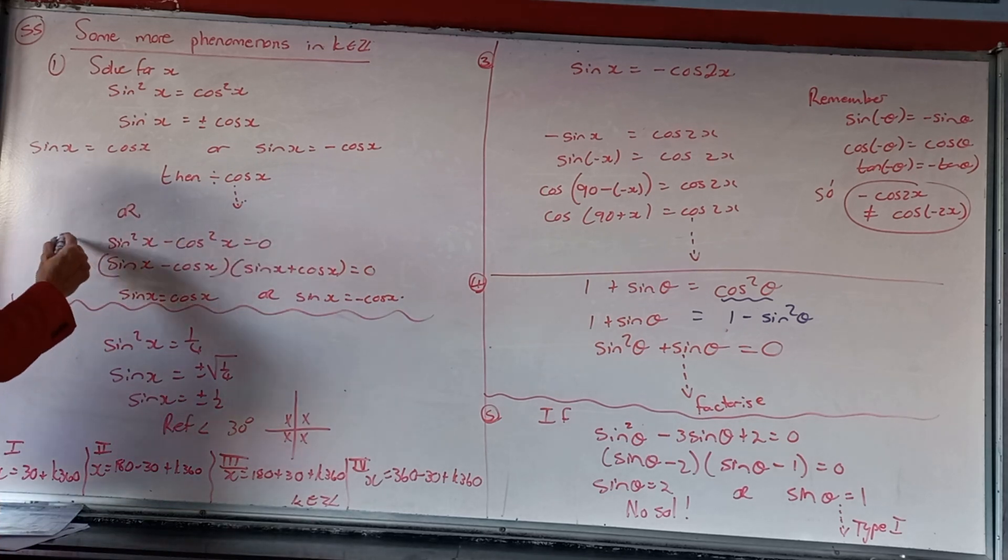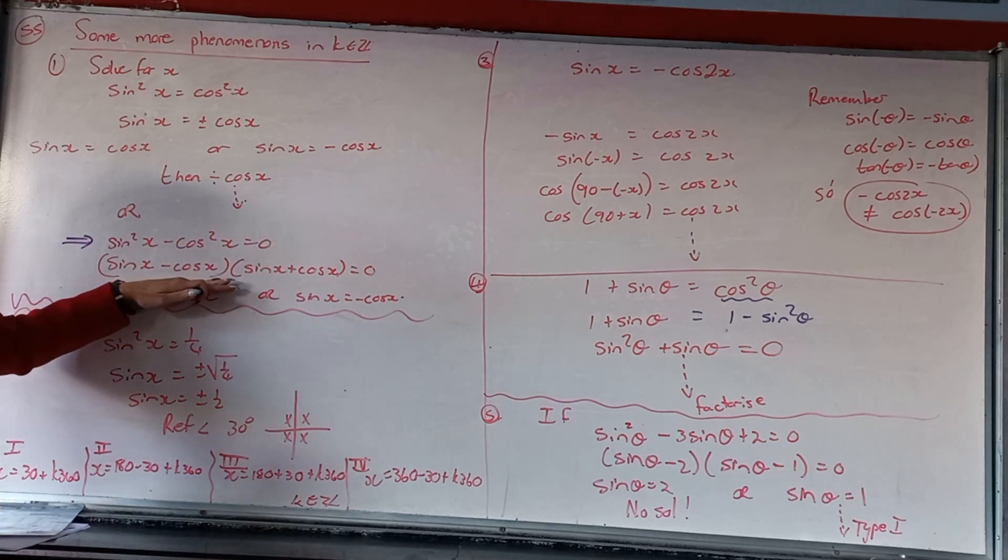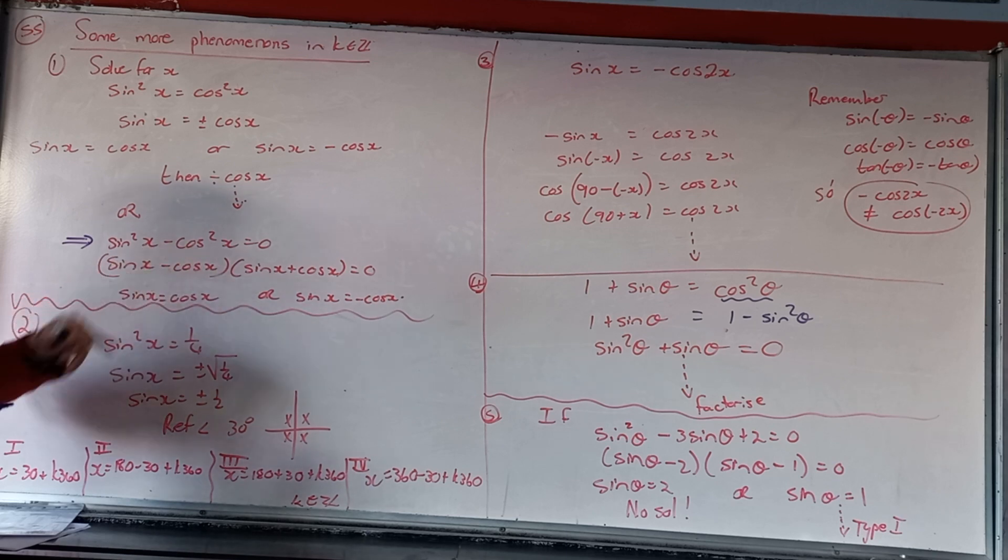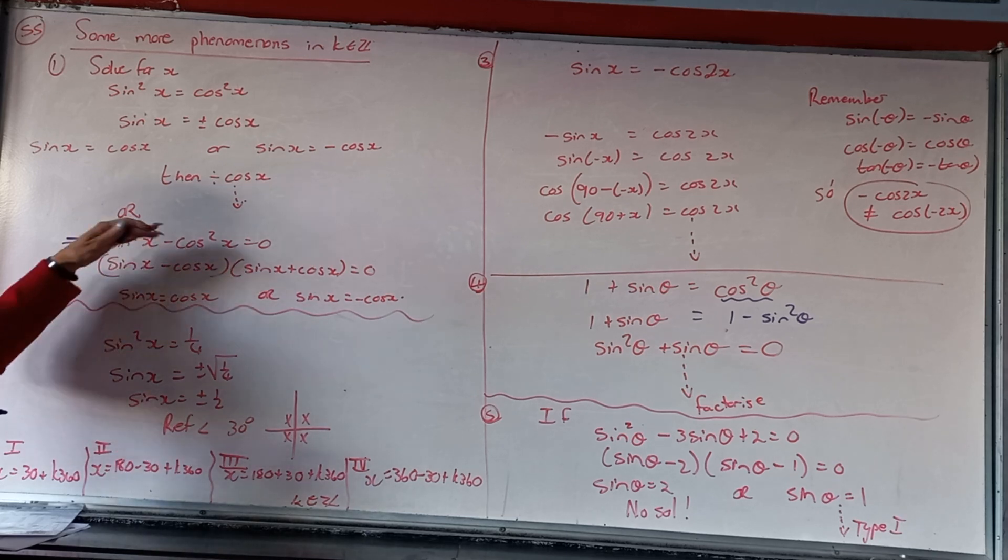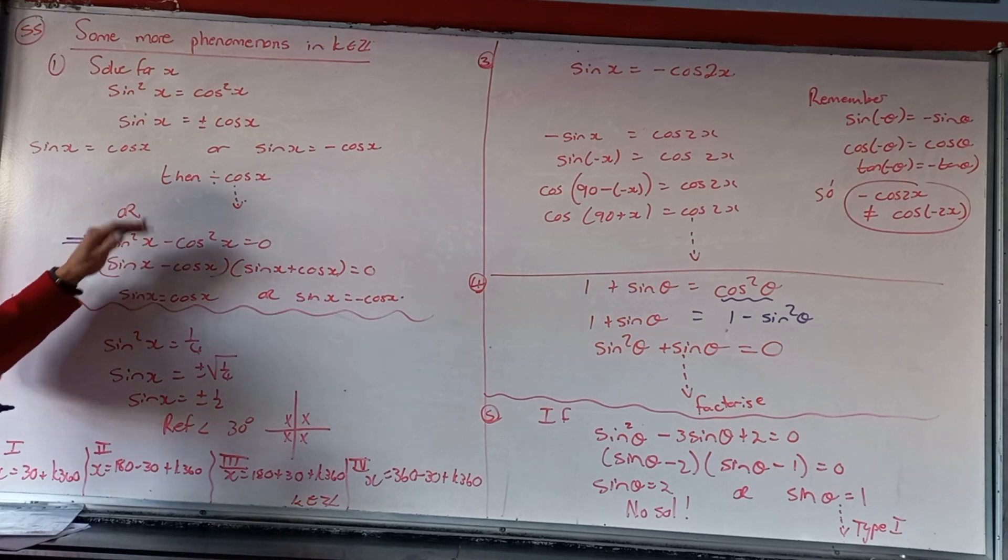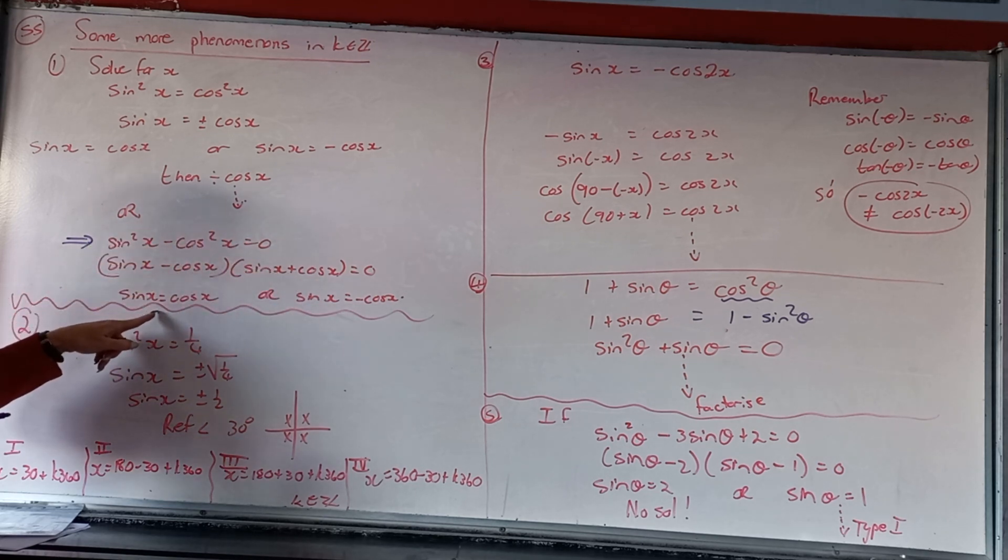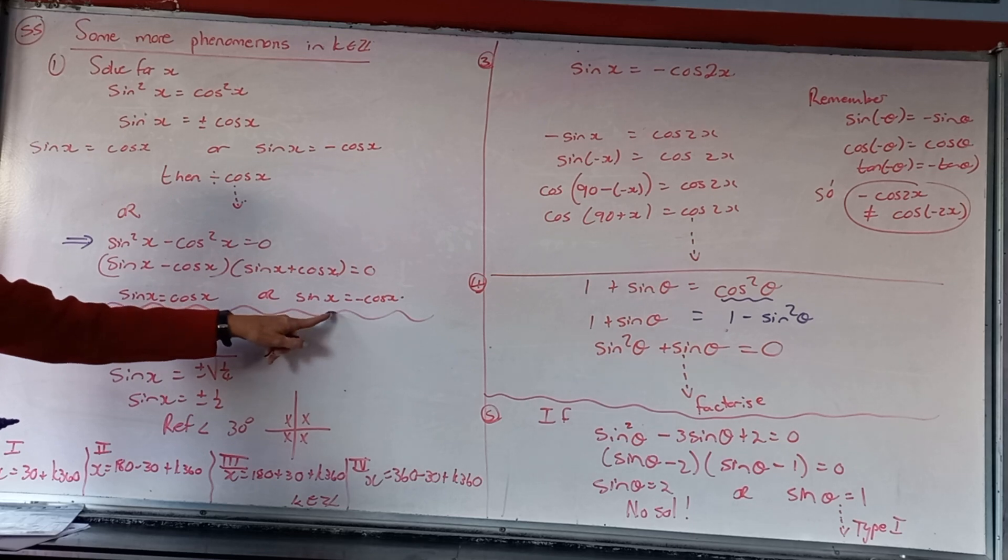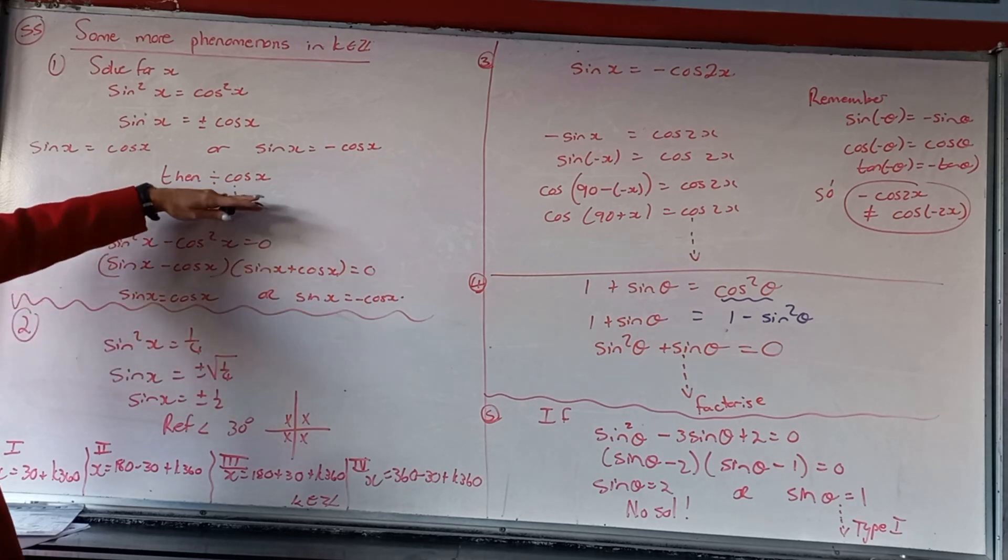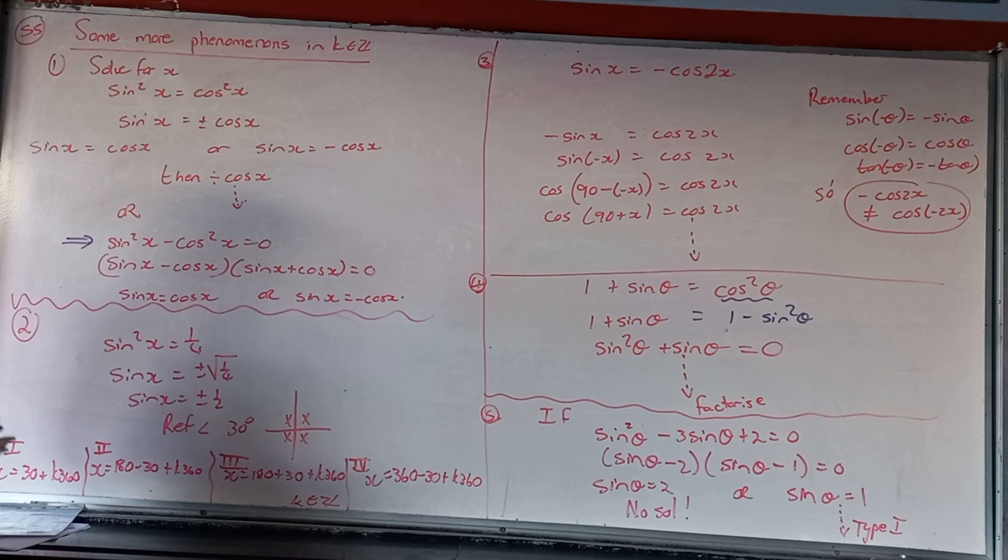Another alternative for that is if you have factorized sin squared minus cos squared is the difference of squares. So we factorize by saying sin minus cos, sin plus cos. But the same thing will happen, we'll have sin equal to cos and sin equal to minus cos.